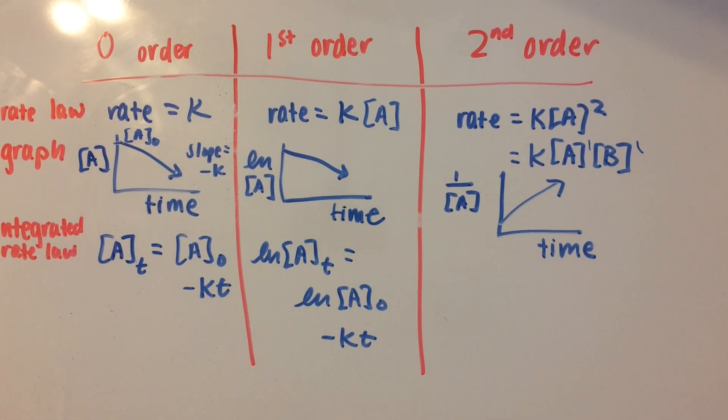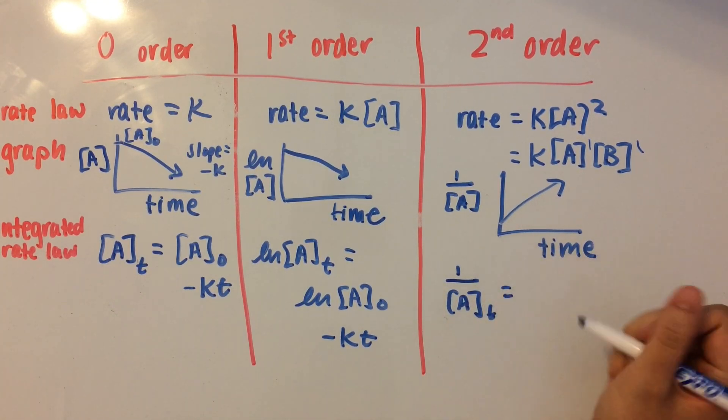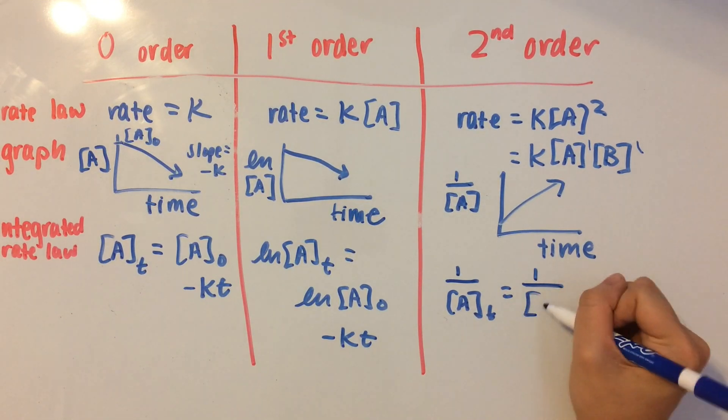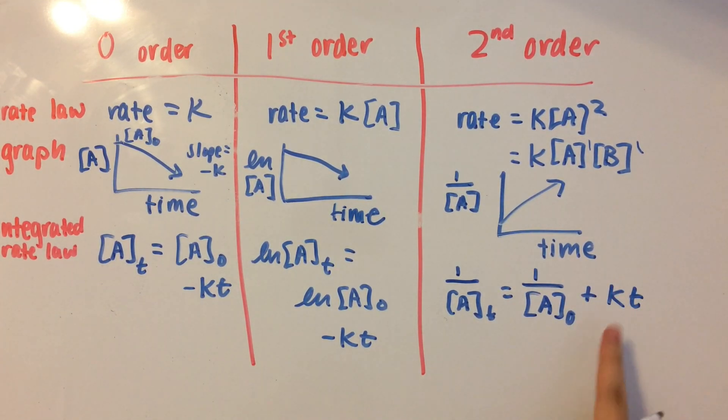And then the integrated rate law is going to be 1 over concentration of A at any specific time equals 1 over initial concentration plus kT. And this is going to have a positive slope.